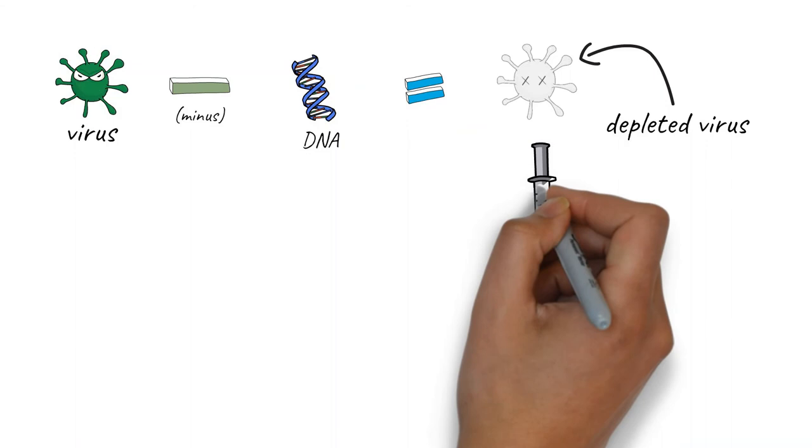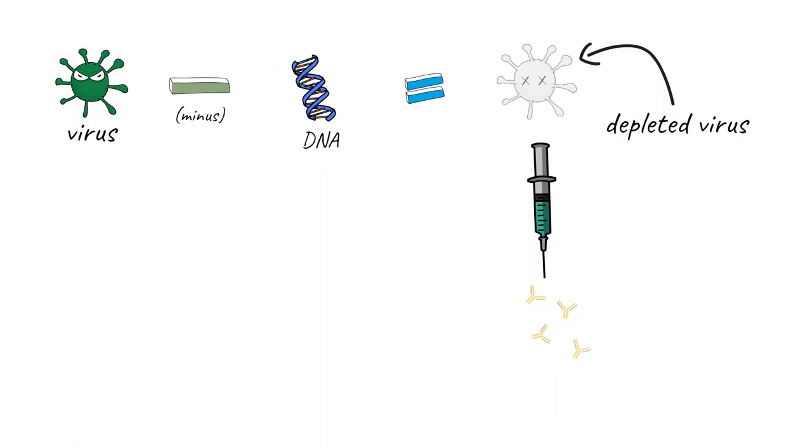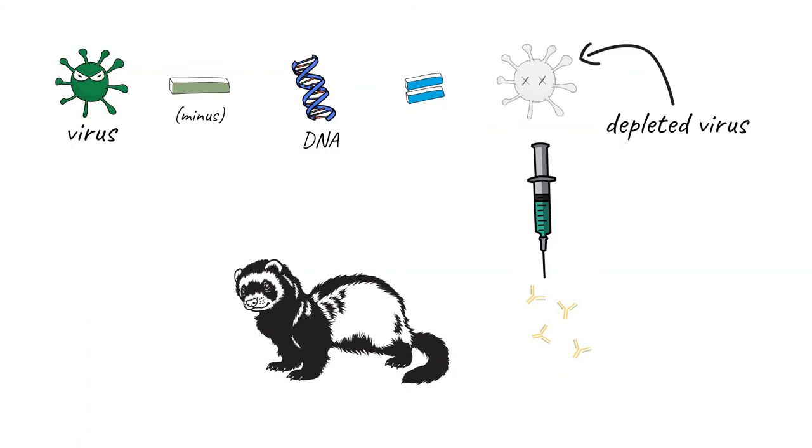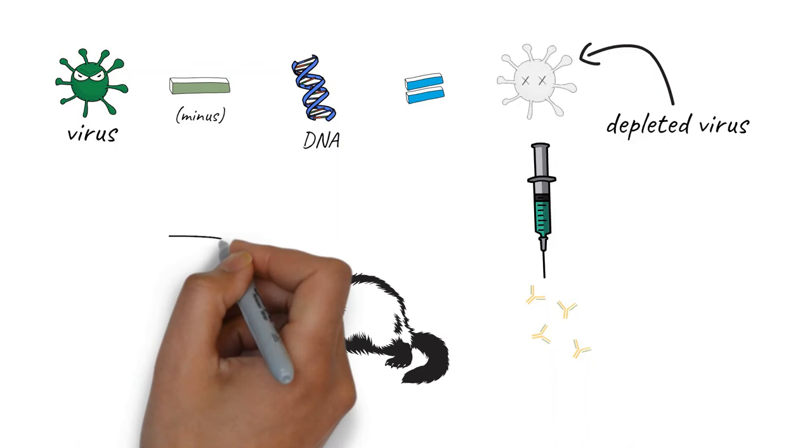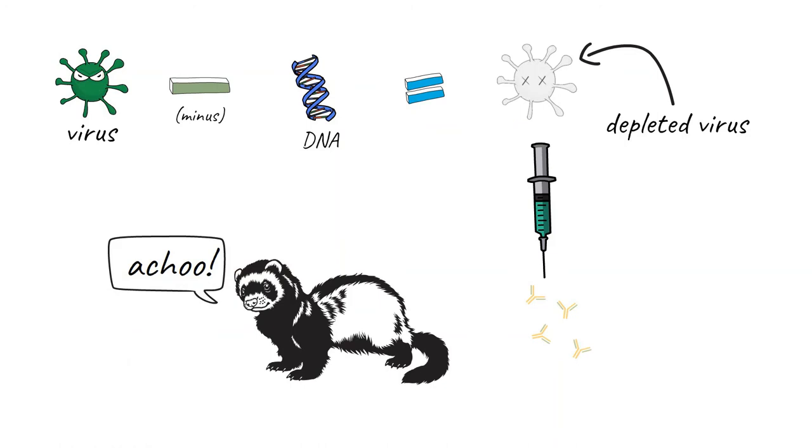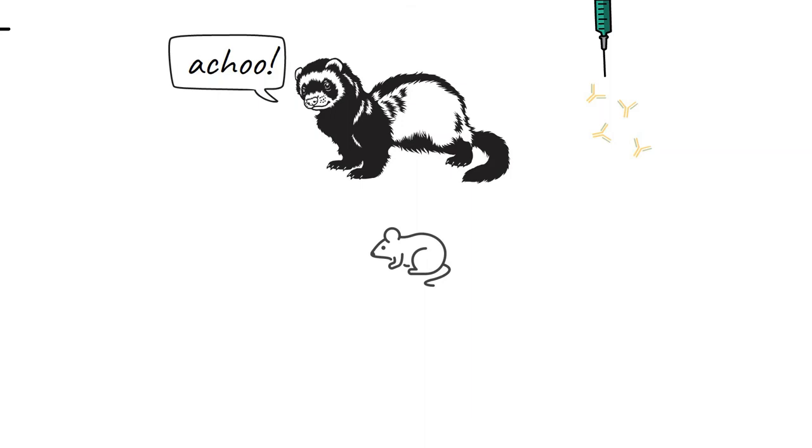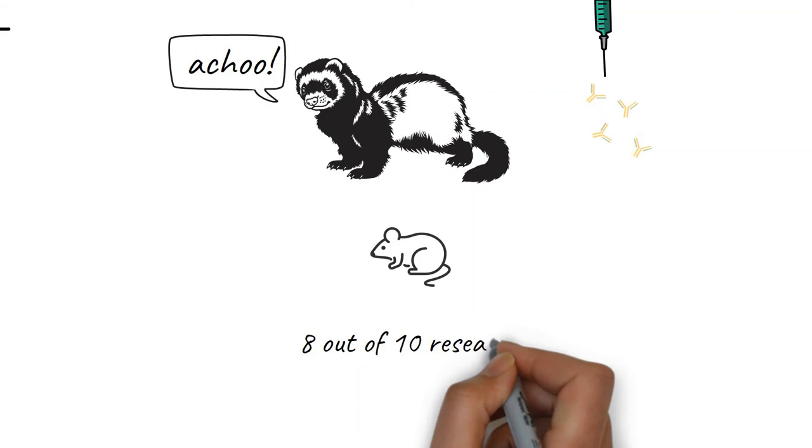But how do we make sure that the depleted virus really can't hurt us? That's where ferrets come in. Vaccines have to be tested on something that has an immune system to see if it is safe and effective. Ferrets are useful for studying flu-like viruses because they catch colds like humans and have similar symptoms.